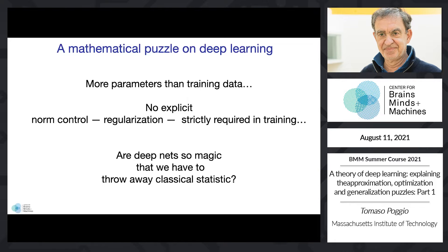One can ask immediately how this is supposed to work in terms of generalization and predicting new data. When I was studying physics, one of the first things we were told was that if you have a model with 10 parameters and want to fit from data, you better have 20 times as many data points — 100 would be even better. Now the field of deep networks seems to say the opposite: use many more parameters than data and things will be fine.